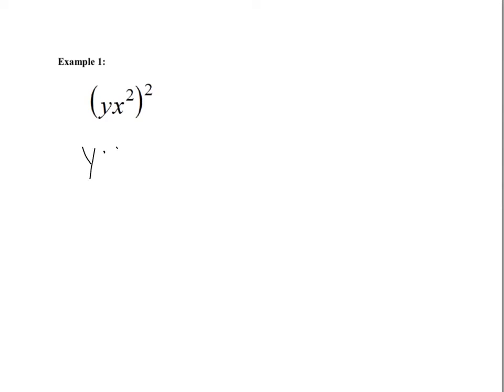What we're really saying is y times x times x, and then raised to the second power — so times y times x times x. That's really what we're saying here. Y times x squared raised to the second power is really y times x times x times y times x times x. We can use our product rule and look at the y's — we have y times y, so our answer is going to include y squared.